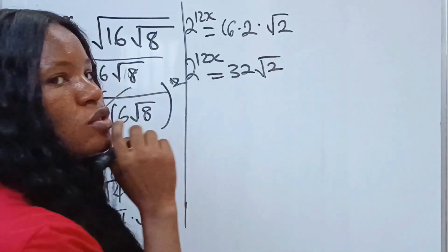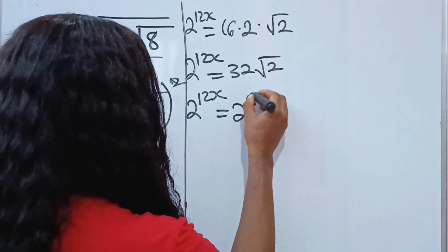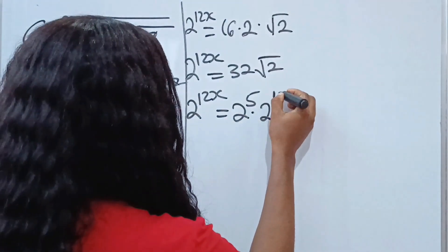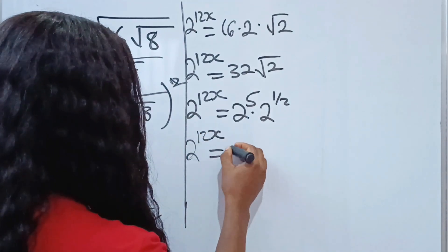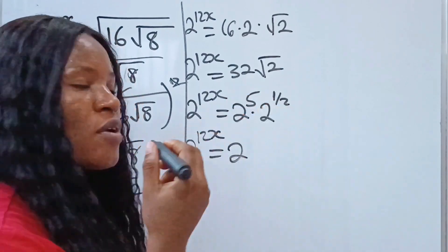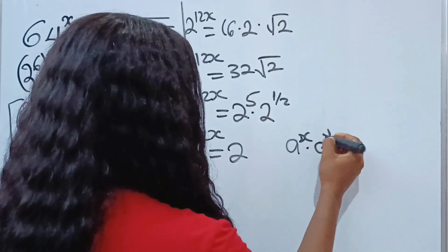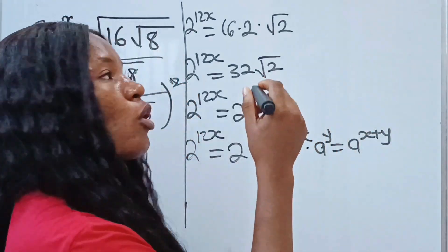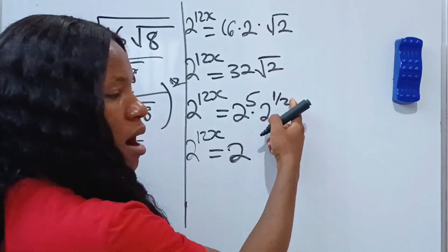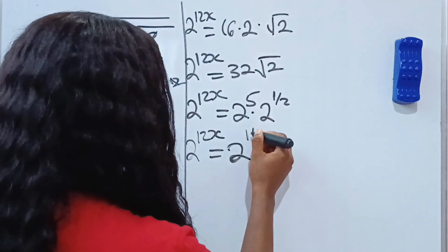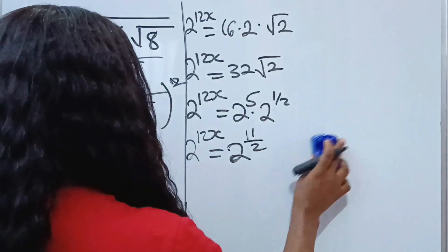So we have 2 to the power of 12x is equal to 32 square root of 2. Now, 32 is the same thing as 2 to the power of 5, multiplied by 2 to the power of one half, because square root is the same as the power of one half. So we now have 2 to the power of 12x is equal to 2 to the power of 5 plus one half. Because when you have the same base multiplying, you add the powers: 8^x times 8^y equals 8^(x+y). So 5 and a half is the same thing as 11 over 2, because 2 times 5 is 10, plus 1 is 11.